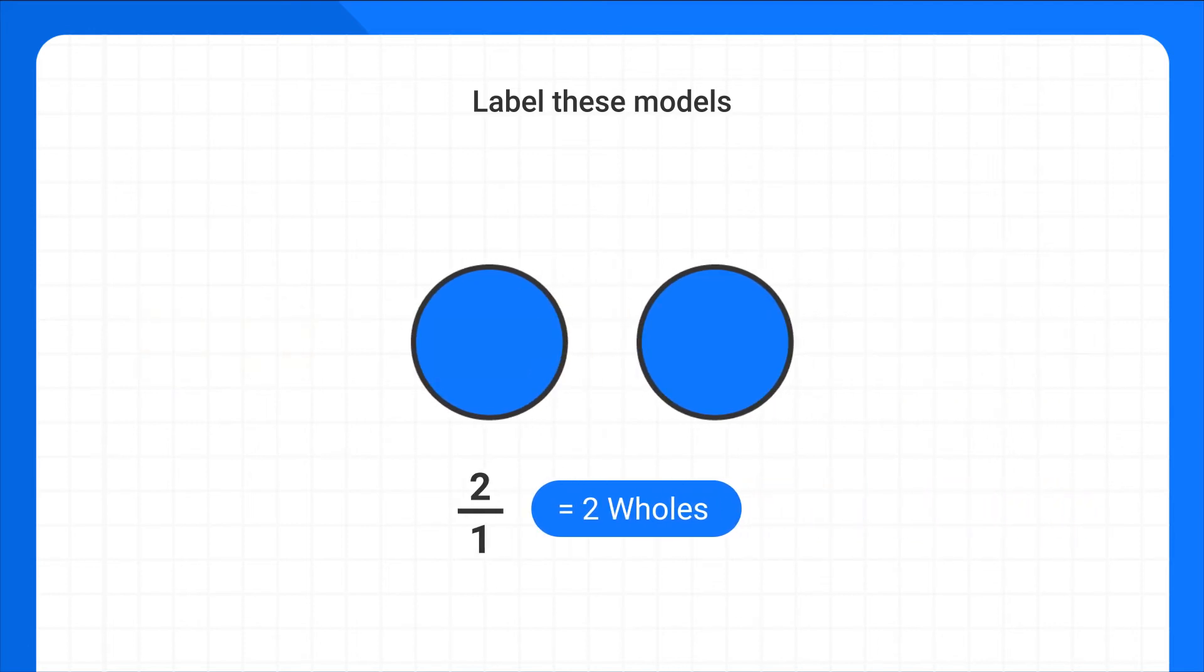What you need to remember is that when we have whole numbers, or whole shapes, we write them using a denominator of 1.